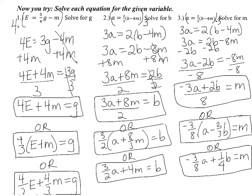Here are the three possible answers for each of those three questions. For number one, I cleared the fraction by multiplying everything by 4 and ended up with 4e equals 3g minus 4m, then isolated the variable. I'm realizing I made a mistake — the correct answer should be 4e plus 4m, the whole thing over 3.